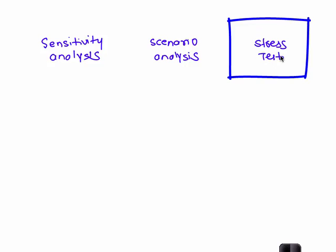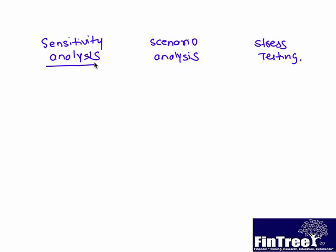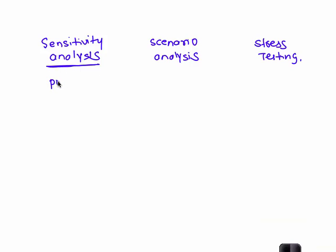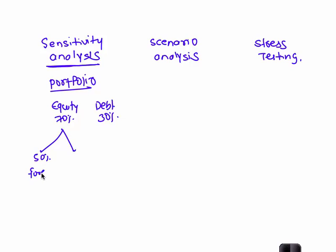Let us understand sensitivity analysis first. Let us say we have a portfolio which is made of 70% equity and 30% debt. Now out of this 70% equity, about half of it — that means half of half, so 35% of the total — is invested into foreign stocks, and the remaining half is invested into domestic stocks.